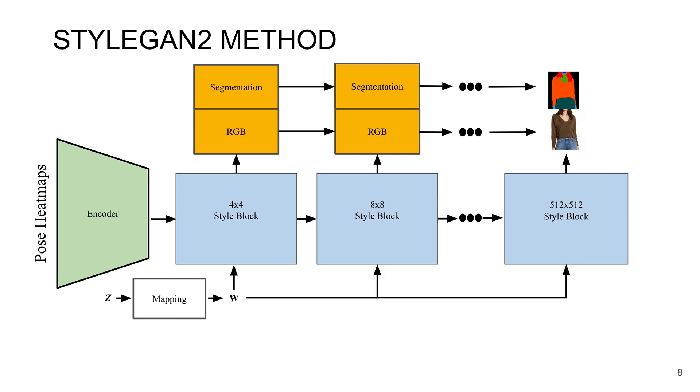The second change we make is outputting segmentations at each resolution. This will enable us to use the segmentations as a mask in the optimization that I'll talk about. So for example, we can separate the garment from the identity.